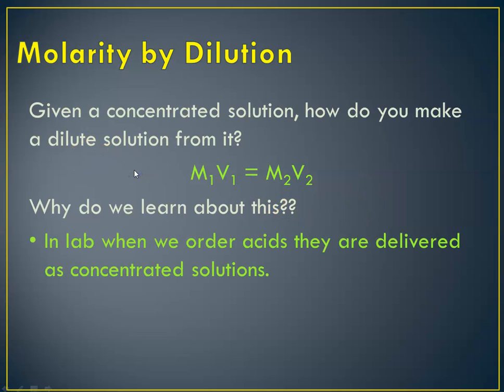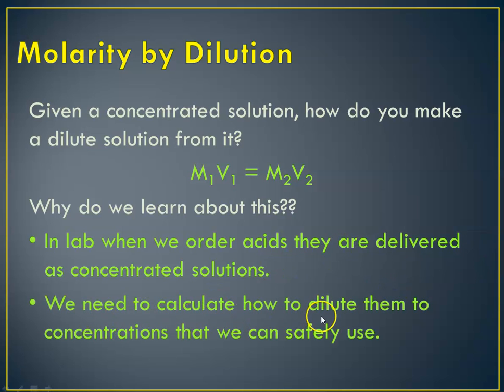Well, it turns out you should care. In lab, we order things often that come as solutions. And in particular, in lab, whenever we order acids, they're delivered as concentrated solutions. Depending on the acid, it's either 12 or 16 moles per liter. But we need to calculate how to dilute them because we can't use concentrated solutions. In lab, we like to get them diluted down to 6 molars or 1 molar or 2 molar. So we have to have a way to calculate this safely. And that's where this equation comes in.